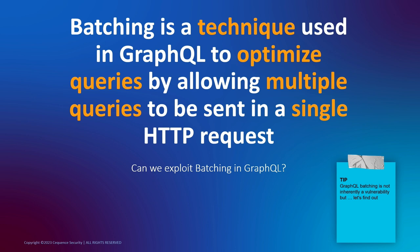Batching can be done on both queries and mutations. Imagine you are given a sign-in page where you just provide your email address and receive an OTP. The login flow is: sign up, get OTP, enter OTP, and you're logged in. Now, if there is a batching vulnerability on a mutation request, what if I can send 10,000 OTPs in one request — and even if one OTP is correct, I will get a successful response?